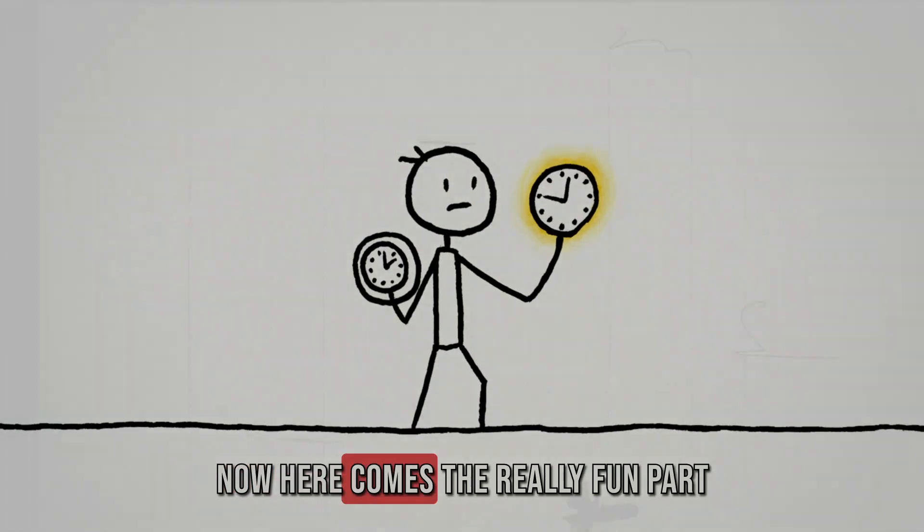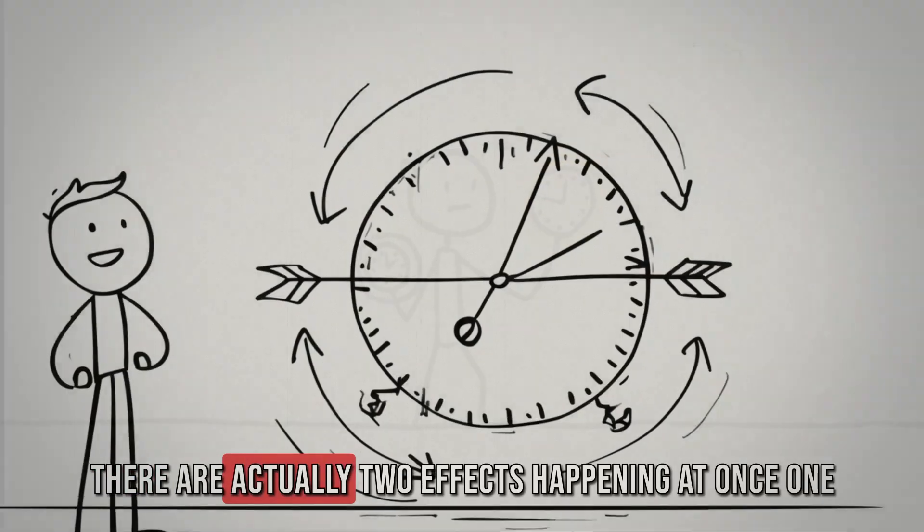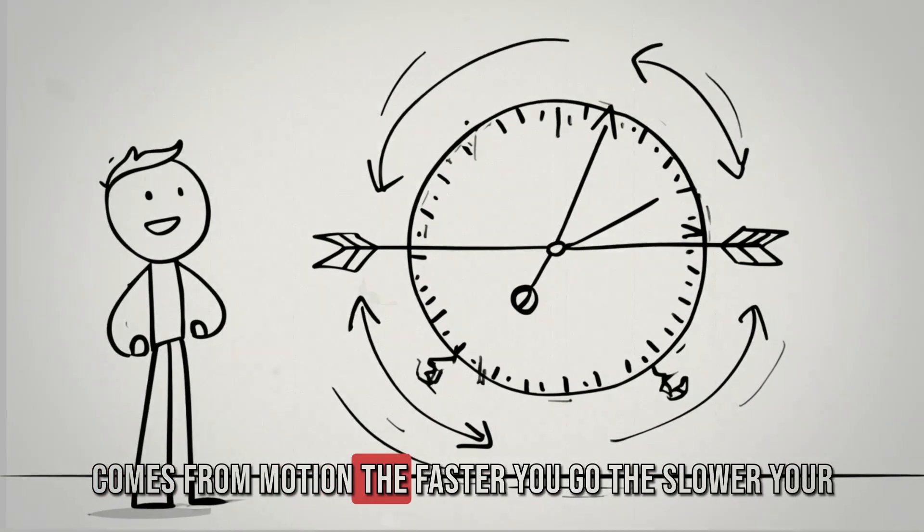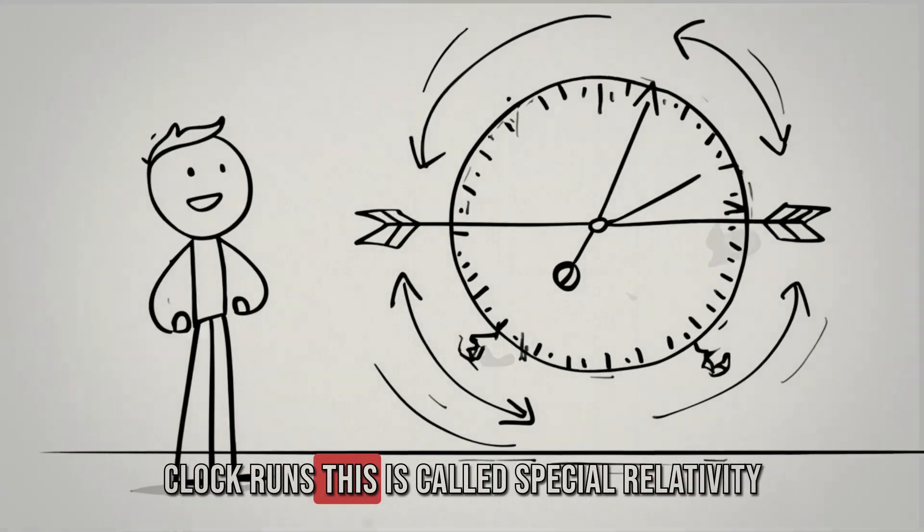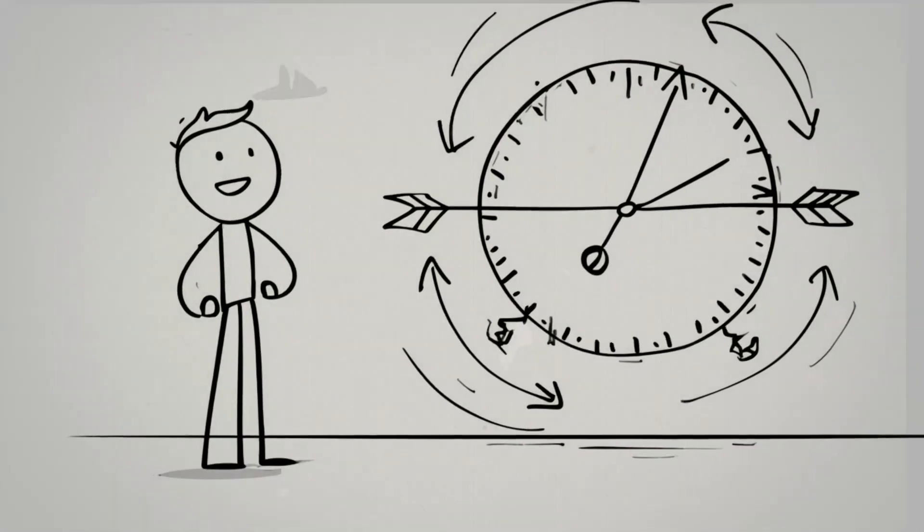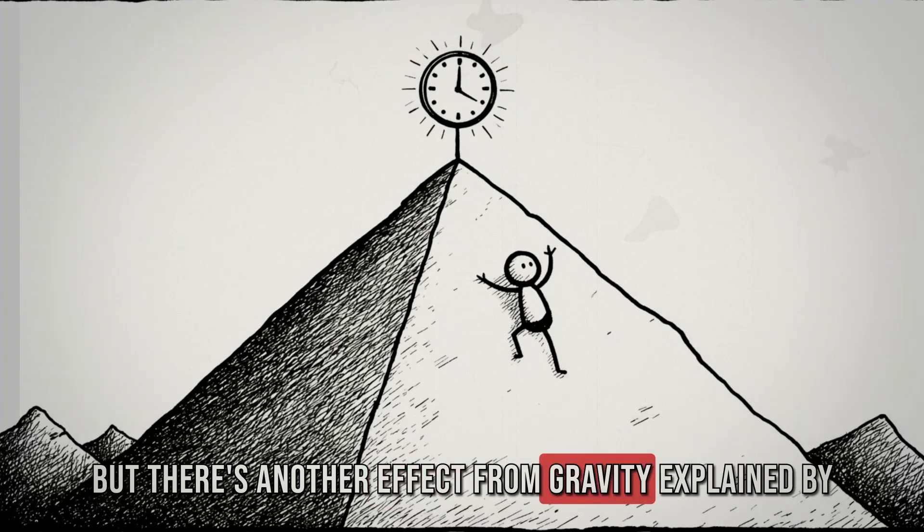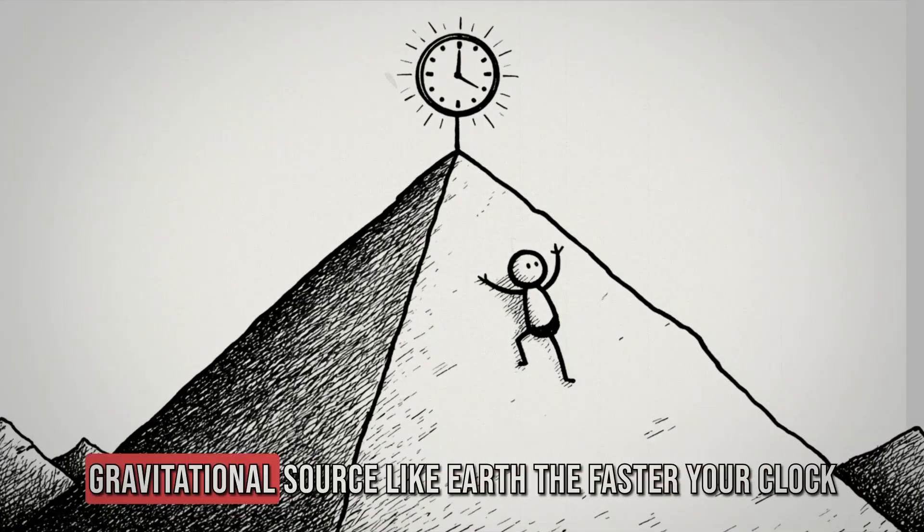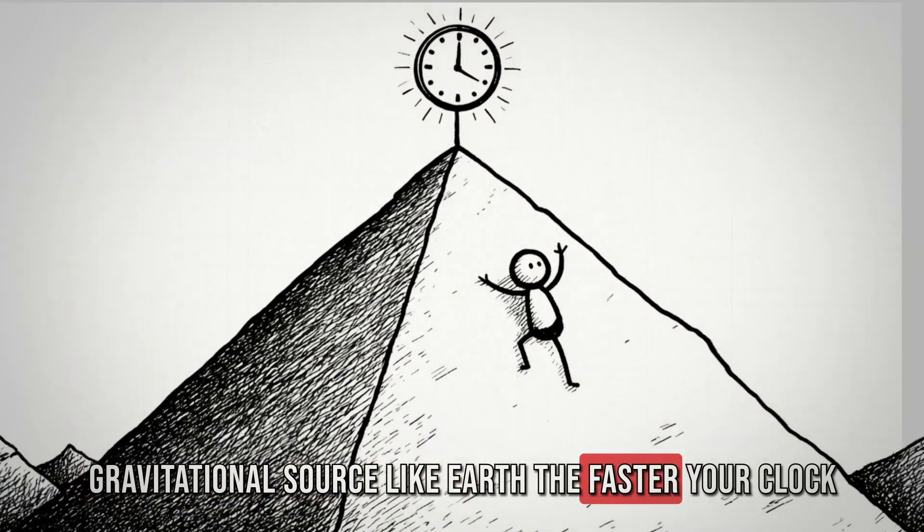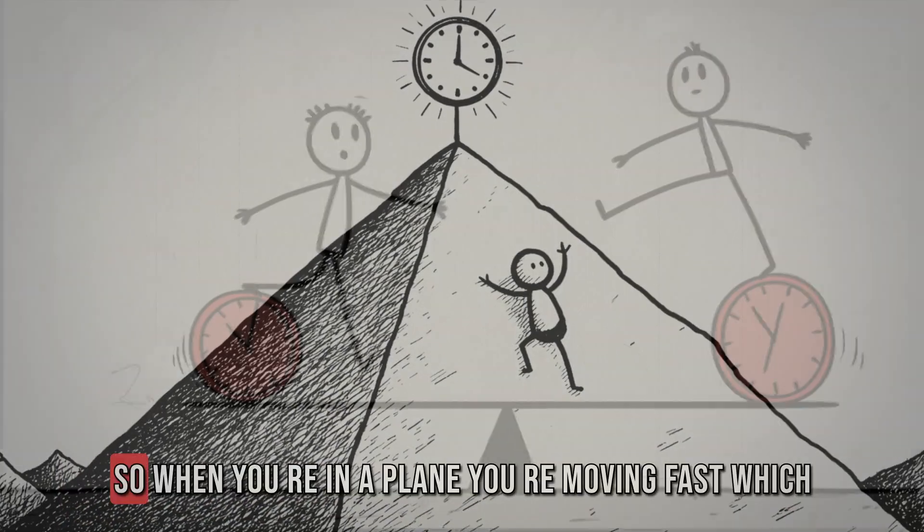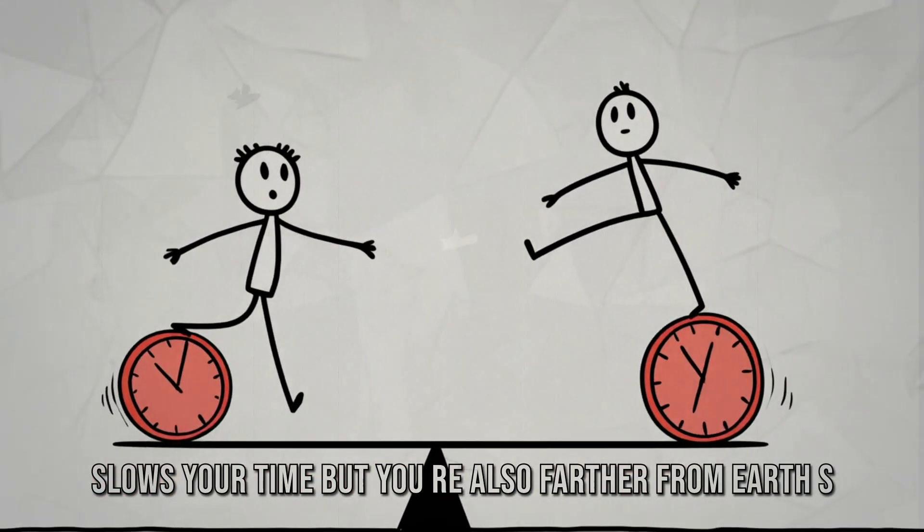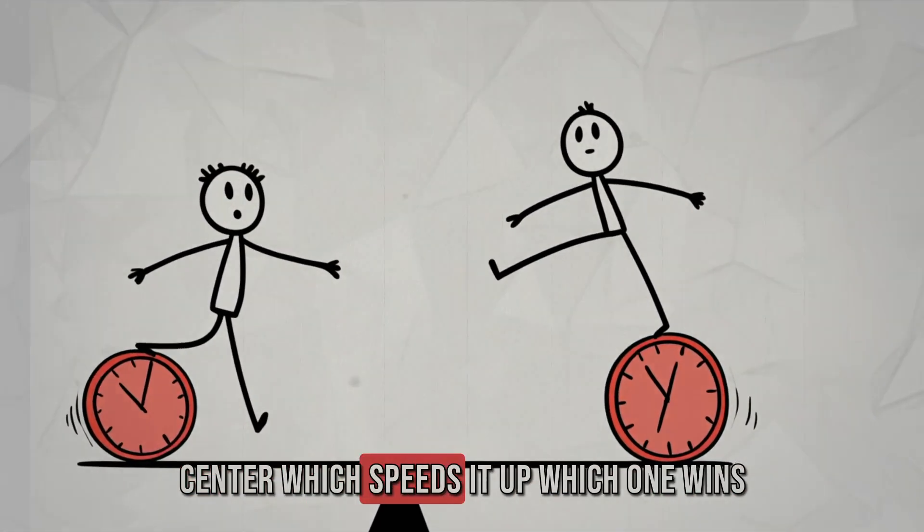Now, here comes the really fun part. There are actually two effects happening at once. One comes from motion. The faster you go, the slower your clock runs. This is called special relativity. But there's another effect from gravity, explained by general relativity. The farther you are from a gravitational source like Earth, the faster your clock runs. So when you're in a plane, you're moving fast, which slows your time. But you're also farther from Earth's center, which speeds it up.